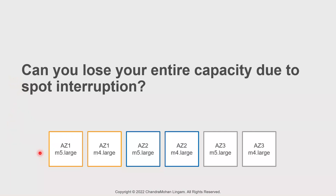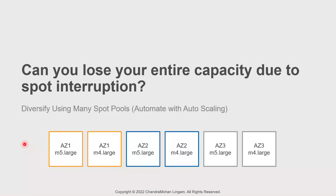AWS maintains spot pools by availability zones, instance family, type, generation, and so forth. The supply and demand vary by spot pool. So a common strategy is to bid for spot capacity in multiple spot pools. Even if there is insufficient capacity in one spot pool, you may find plenty of availability in others. With autoscaling, we can automate this process of bidding across multiple spot pools.